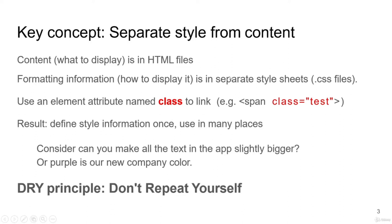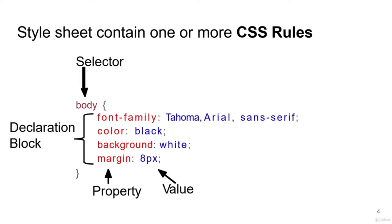Use an element attribute called 'class' to link it. For a span tag, I will use a class attribute and name it. Define style information once and use it in many places. Consider: can you make all the text in the app slightly bigger, or 'purple is our new company color'? Save the CSS file with the .css extension and use it in your HTML file. HTML holds only the content to be displayed, and the CSS file holds the styles to be applied.